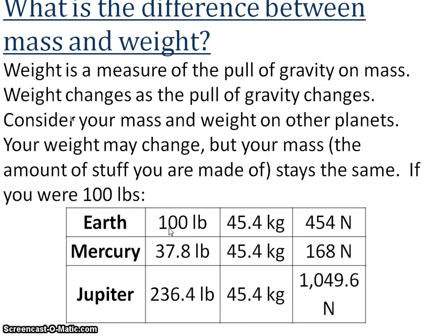Notice here, Earth, if you're 100 pounds, Mercury, you'd only be 37.8 pounds. Your mass stays the same, but the pull of gravity that makes your weight, that is different. Your weight may change, but your mass, all that stuff you're made of, is going to stay the same if you travel between each of these planets. So 45.4 kilograms is going to be the same anywhere in the universe, but your weight might change depending on the mass and the amount of gravity that's pulling on it.